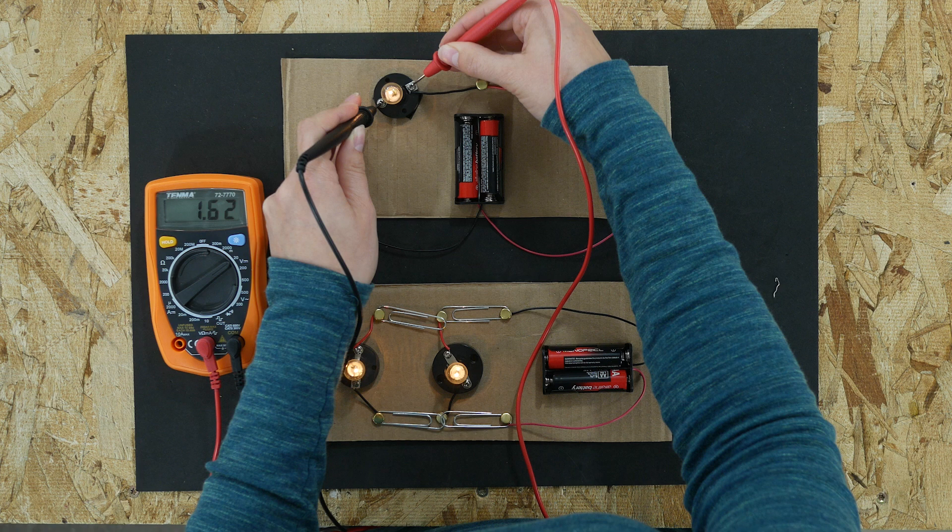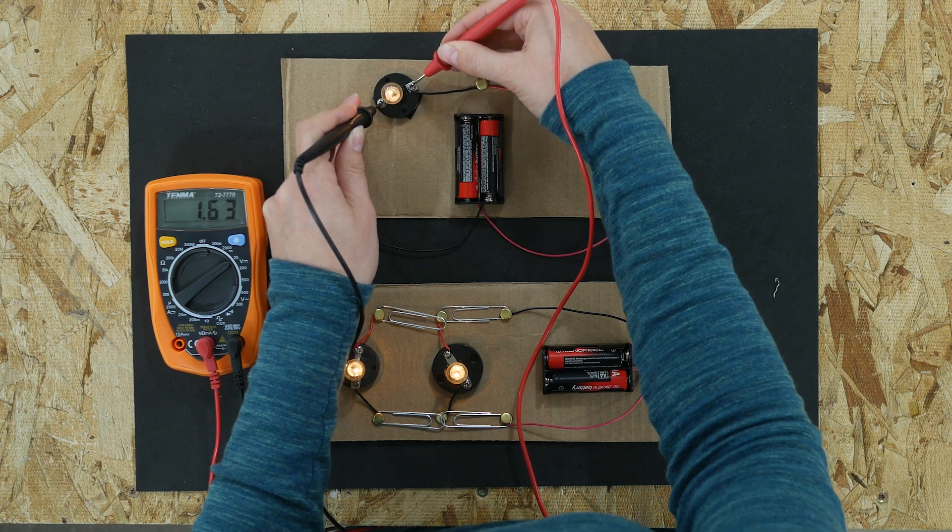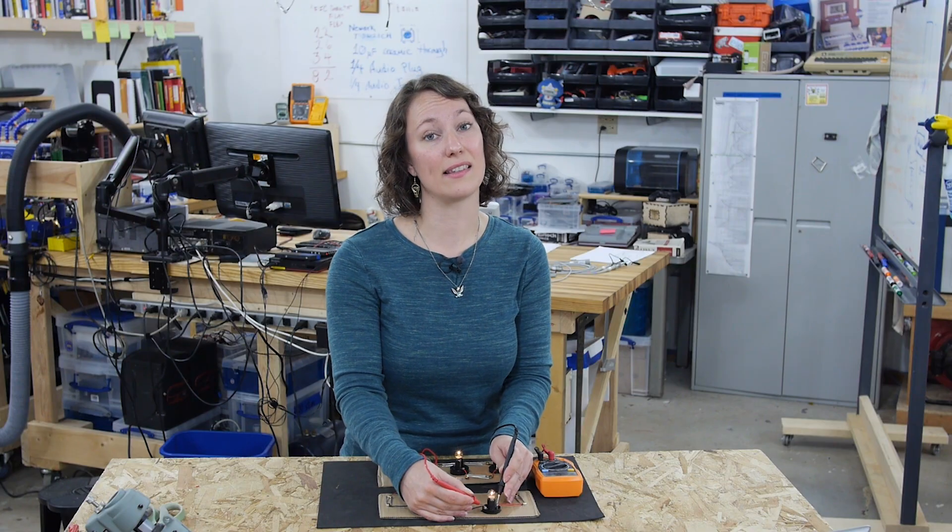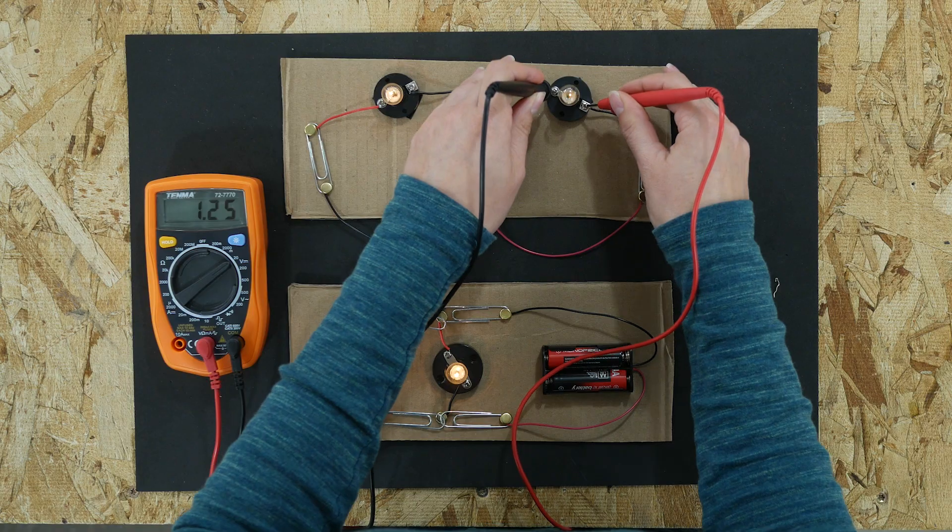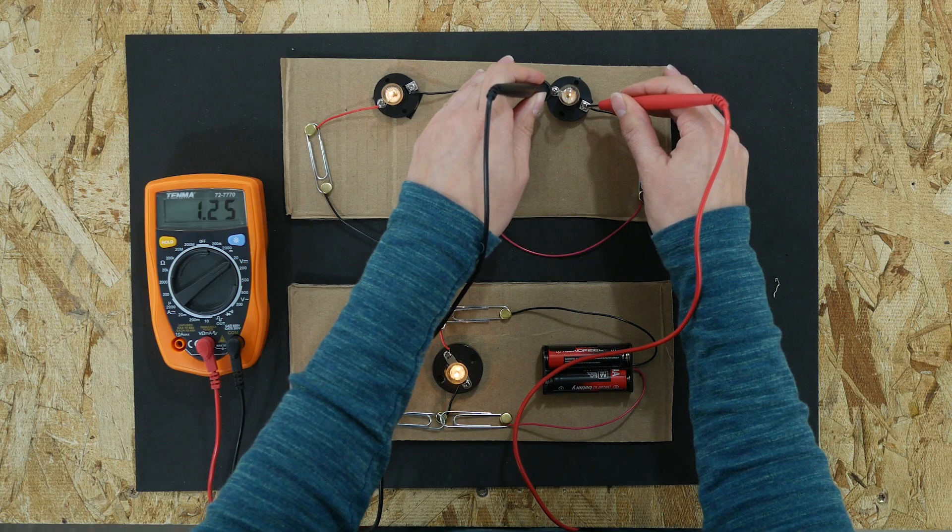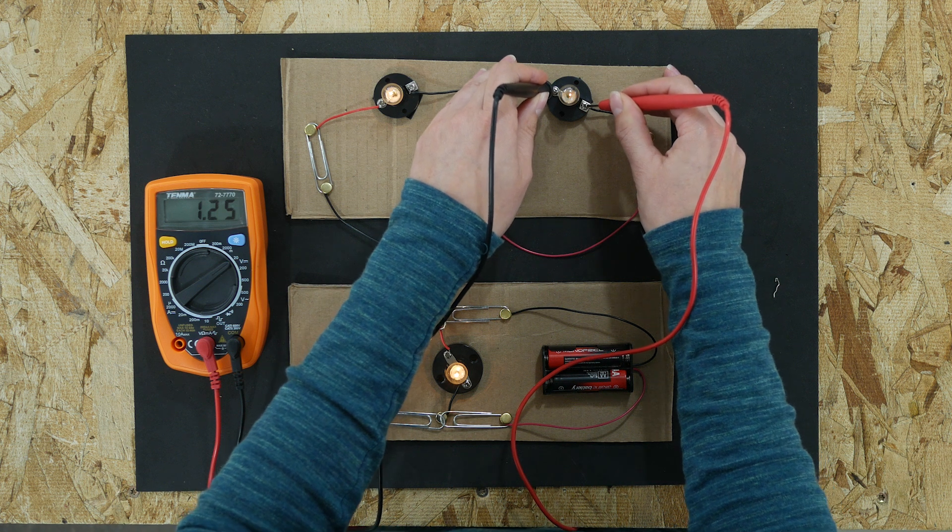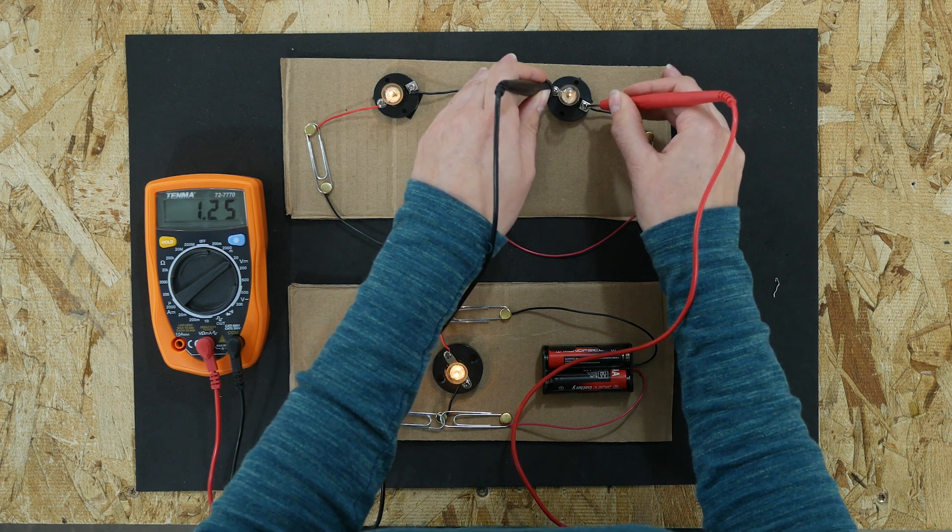In the series circuit, the first light bulb is getting about 1.6 volts. That's a lot less than the light bulbs in the parallel circuit. Let's look at the second light bulb. The second light bulb in the series circuit is getting about 1.2, 1.25 volts, less than the first light bulb.